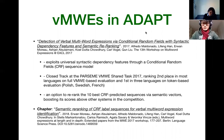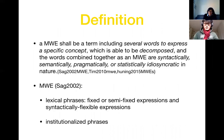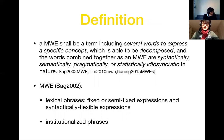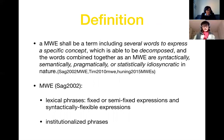Many researchers define multi-word expressions differently, but generally they convey the idea that an MWE is a term including several words to express a specific concept — a concept that cannot be fully decomposed — and the words combine together as multi-word expressions syntactically, semantically, pragmatically, or statistically idiosyncratically in nature. In the earliest work in 2002 by Sag, he also classified these into different types.